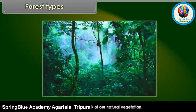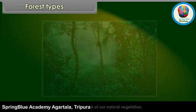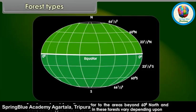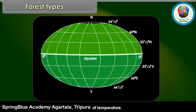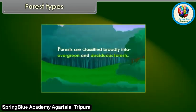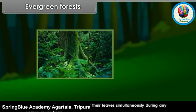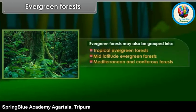Forest types: Forests are found from the equator to the areas beyond 60 degrees north and south, but the types of trees found in these forests vary depending upon the range of temperature. Forests are classified broadly into evergreen and deciduous forests. Evergreen forests may be further grouped into tropical evergreen forests, mid-latitude evergreen forests, Mediterranean and coniferous forests.